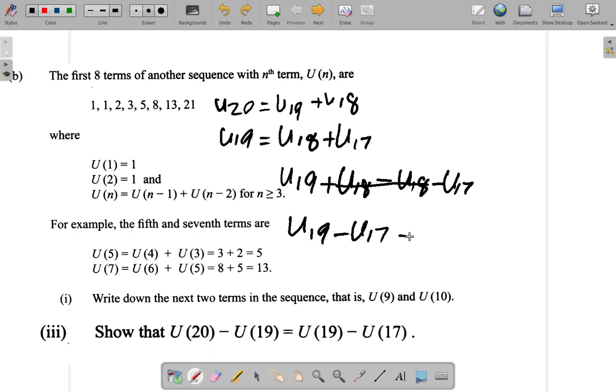What do we have on the right? Oh, it's the same thing. U19 minus U17. So, it is shown. All right. So, it seems as if that is it.